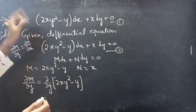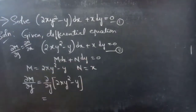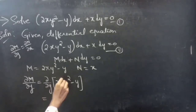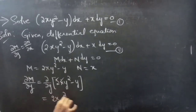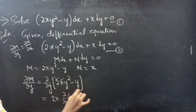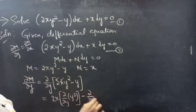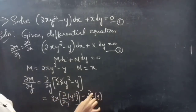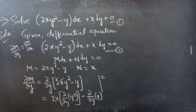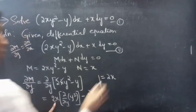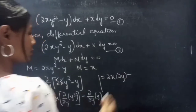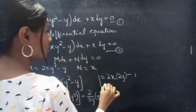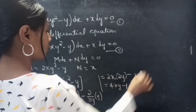Since we are doing the partial derivative with respect to y, x is treated as constant and 2 is also constant. So we get 2x · ∂(y²)/∂y − ∂y/∂y = 2x · 2y − 1, which equals 4xy − 1.